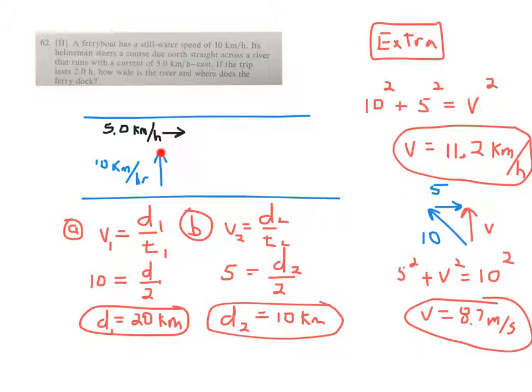But if they aim straight across, due north, the river carries them downriver at the rate of the flow of the current, 5.0 km per hour.